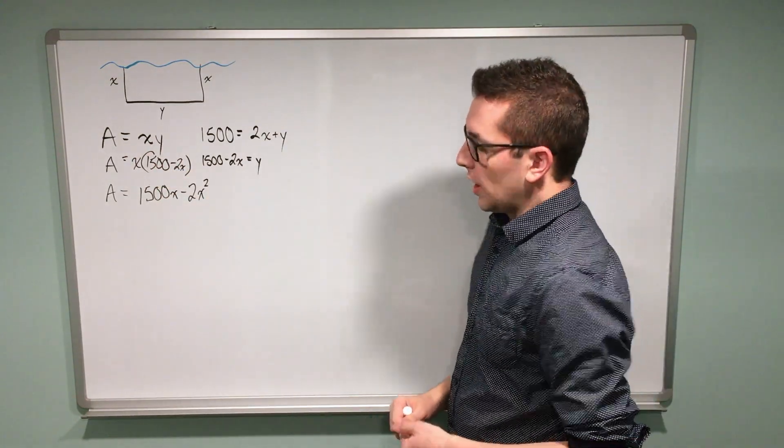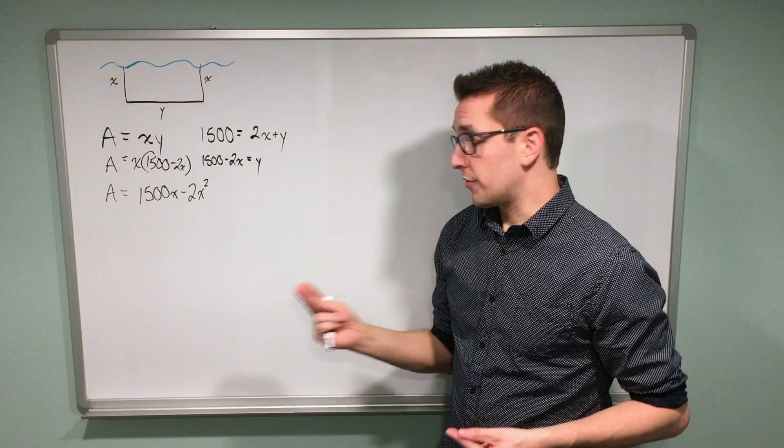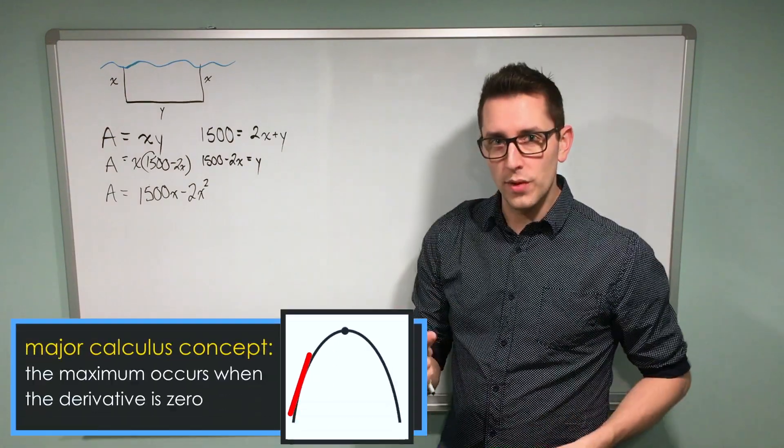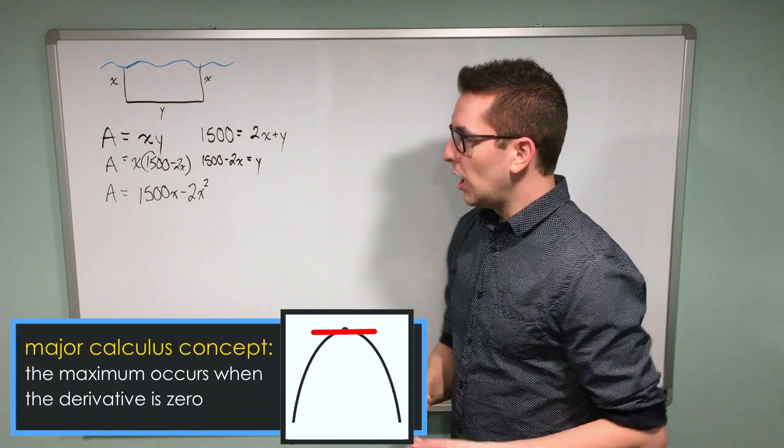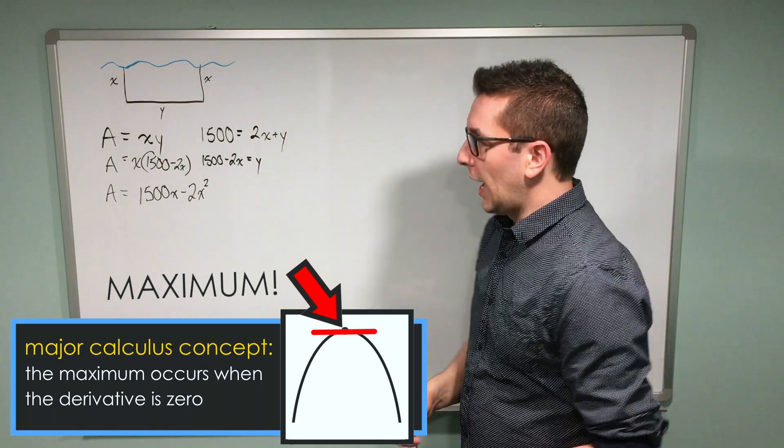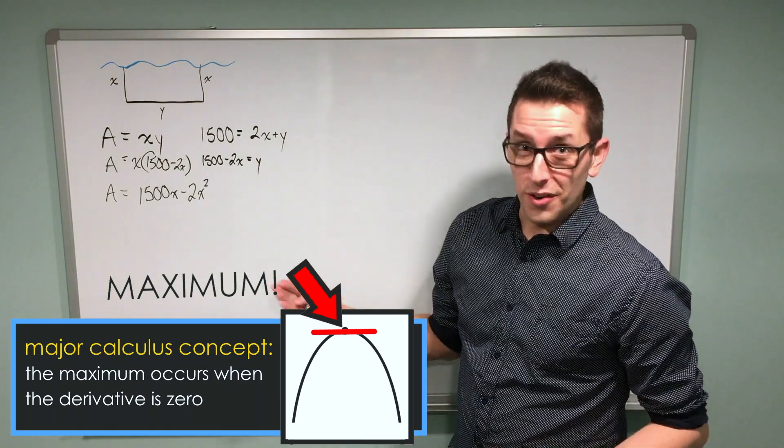At this point, what I want to do is take the derivative of this function. Because remember, when I take the derivative and set it equal to zero, I have a maximum point. And that's what we're trying to do here is maximize the area.